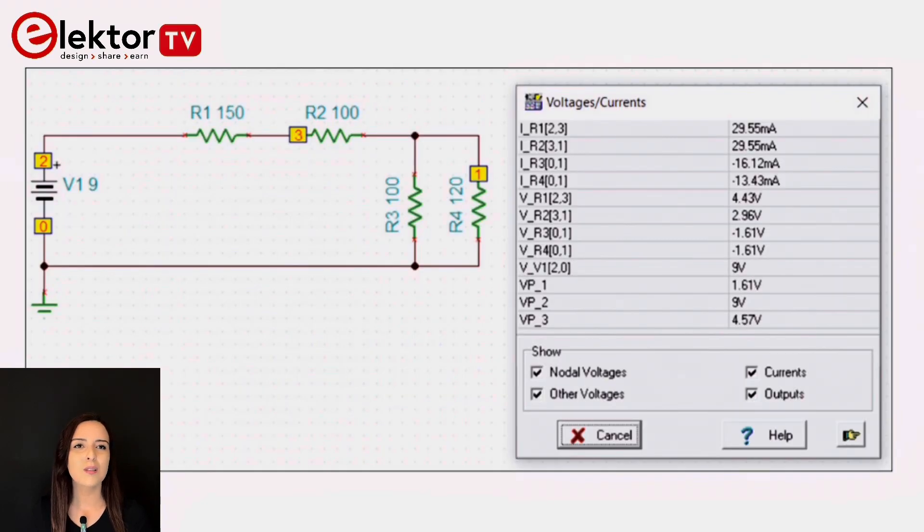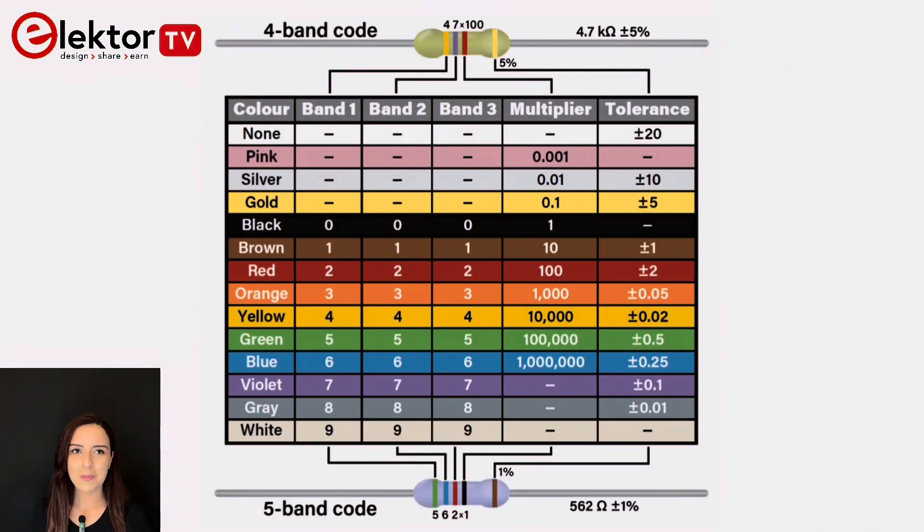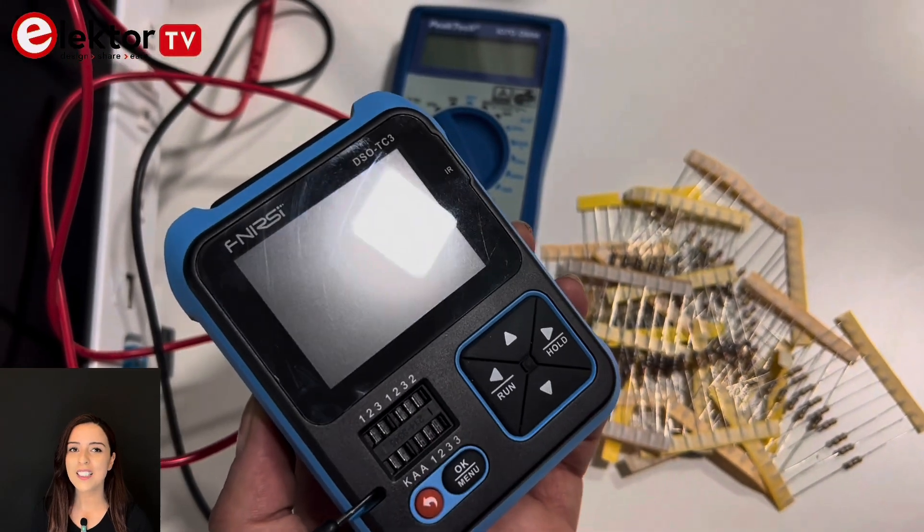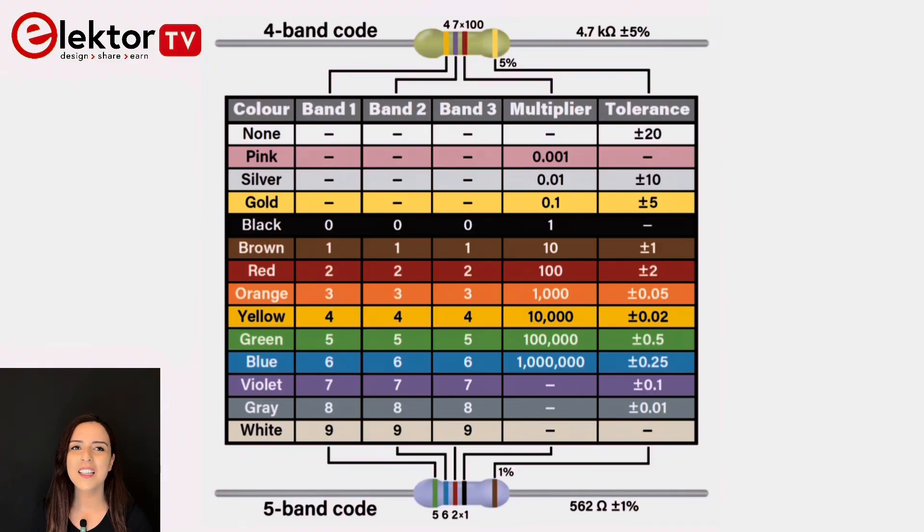Circuit simulation is also introduced at an early stage to enable readers to experiment with different circuits. What really sets this course apart is its commitment to practical understanding. Remember the resistor color code? While it might seem simpler to use a component tester, decoding those tiny colored bands not only teaches you the basics but also keeps you sharp.